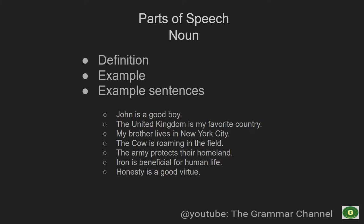Let's have some example sentences. As you see in the page: 'John is a good boy' — John is the name of a person, and boy is a noun as well. 'The United Kingdom is my favorite country' — United Kingdom is a name of a place, and country is a noun. 'My brother lives in New York City' — New York City is a place. 'The cow is roaming in the field' — cow is an animal, again a noun, and field is the place. 'The army protects their homeland' — army is a collective noun.